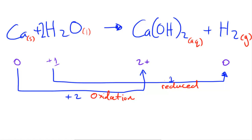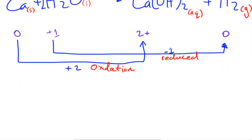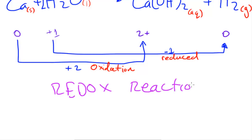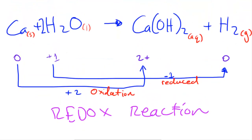So the oxidation number of hydrogen goes from +1 to zero — a decrease of one — confirming reduction. By definition, since something is being oxidized and something is being reduced, this reaction is a redox reaction.